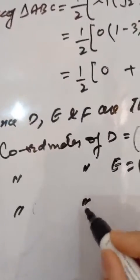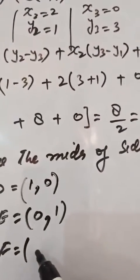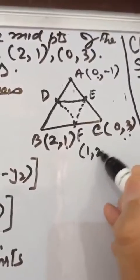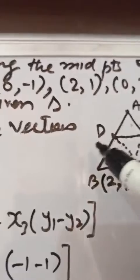Coordinates of F, the midpoint of BC: ((2 + 0)/2, (1 + 3)/2) = (1, 2). So F is (1, 2), E is (0, 1), and D is (1, 0).